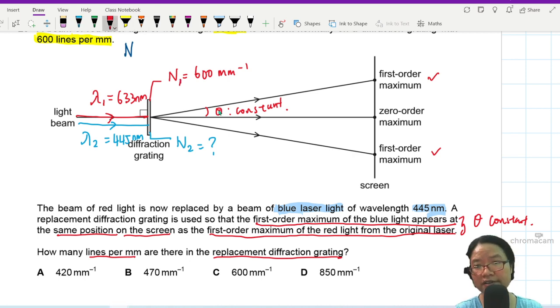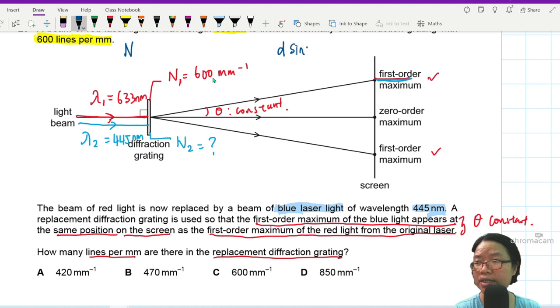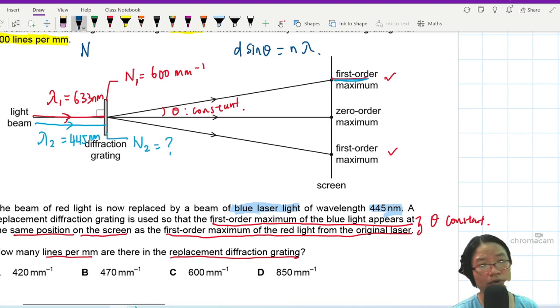Such that the first order red line is here, but also at the same time the first order blue line is also here. So the theta is the same value. We need an equation to relate lambda theta and the only equation for diffraction grating is D sine theta equals N lambda. But hold on, there are a lot of things here that are constant. Remember ratio is your best friend.